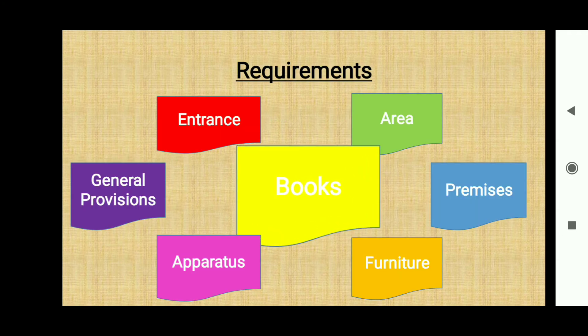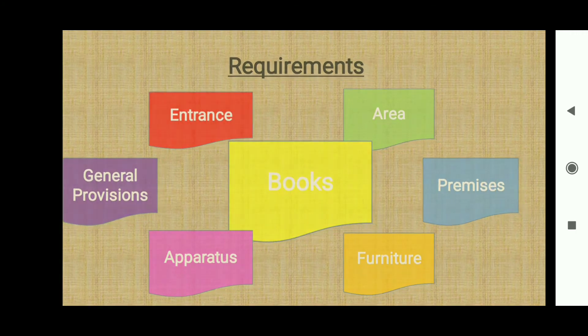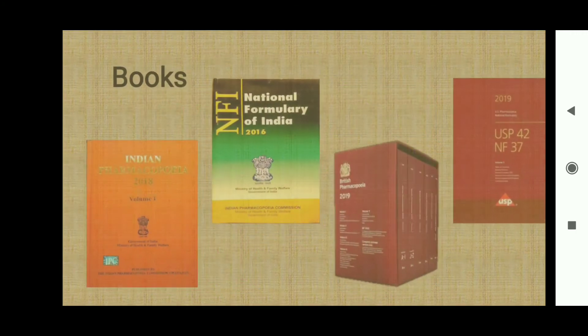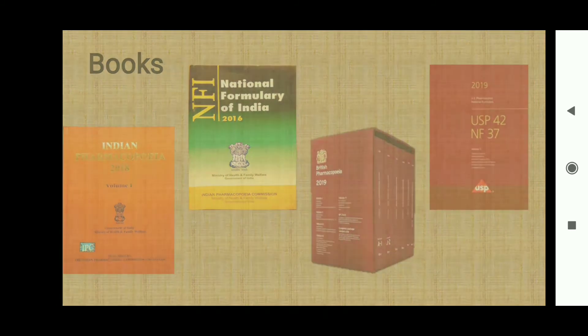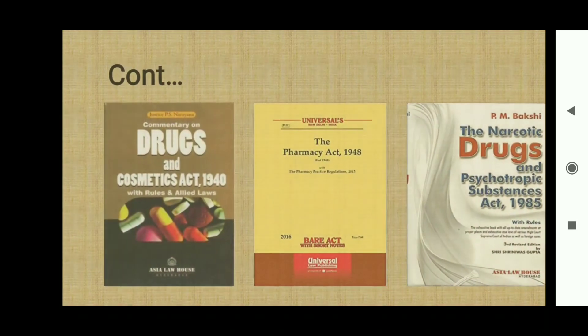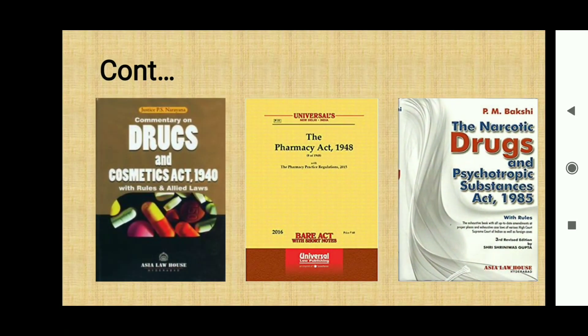Another requirement is books. A pharmacy may have books like pharmacopoeias and national formularies. A pharmacy store can keep rule books like the Drugs and Cosmetics Act, Pharmacy Act, Narcotic and Psychotropic Substances Act, etc.